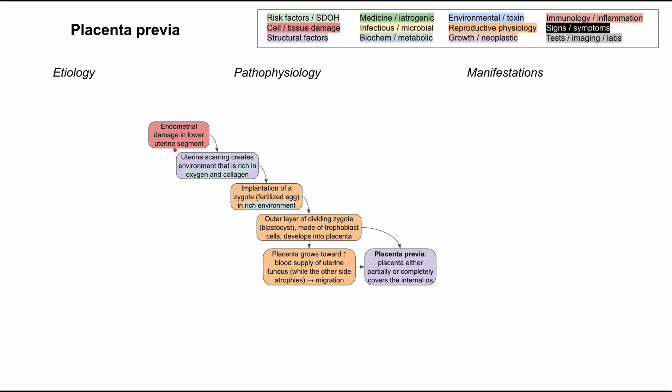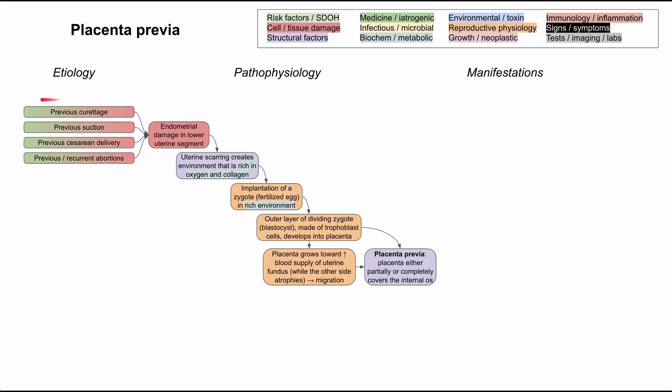What causes this damage in the lower uterine segment? It's usually something iatrogenic — some previous procedure or incident that caused damage to the uterus. Previous curettage as part of a prior D&C can cause endometrial damage that leads to placenta previa. Previous suction can do it as well. Prior c-sections are a well-established etiology. Previous and recurrent abortions are also a risk factor, since abortions usually involve scraping away the endometrium, and sometimes a curettage is performed afterward, causing further endometrial damage.